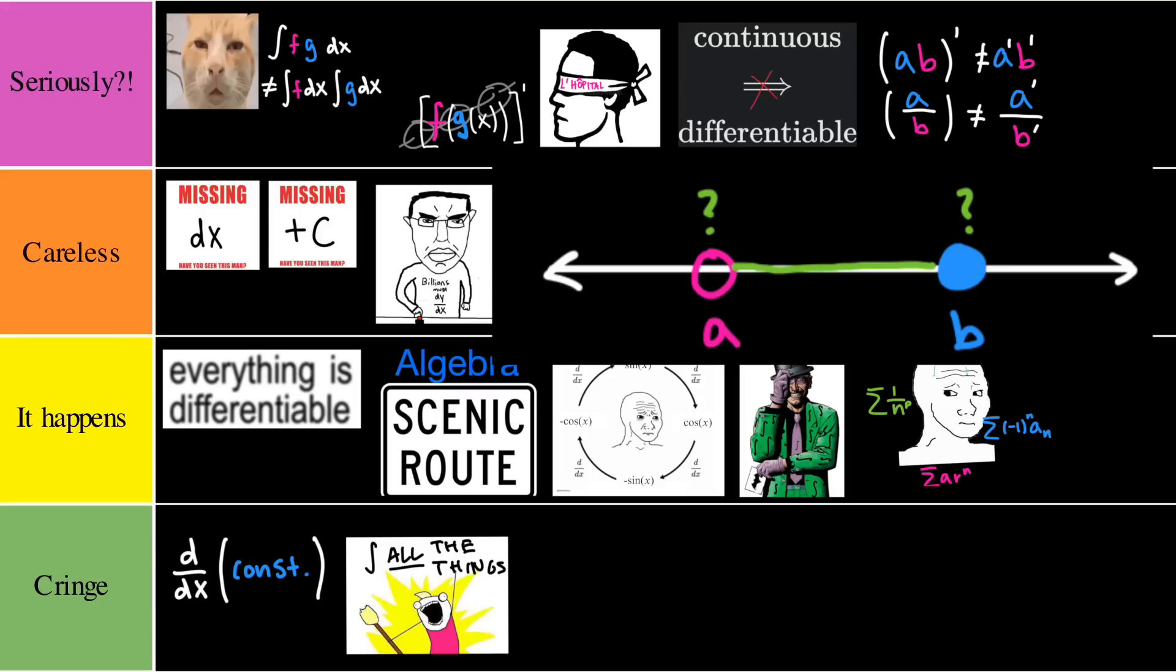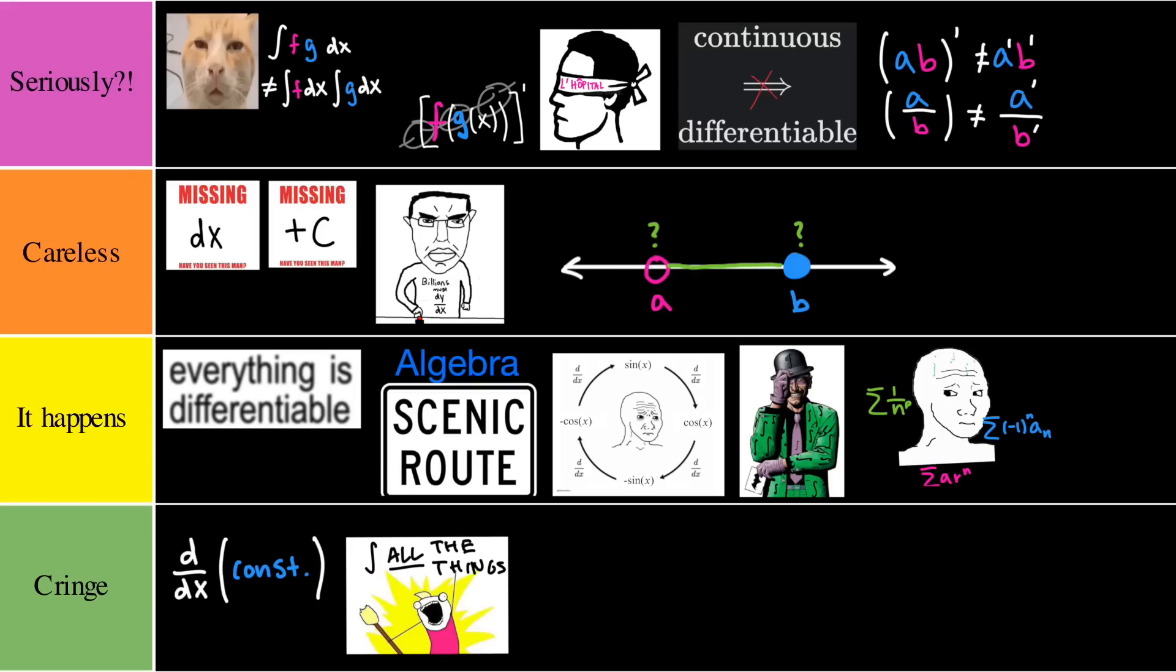Speaking of series convergence tests, our next offender is not checking the interval of convergence for a power series. When we are working with this series, we need to make sure where it converges. But not only that, we have to test the endpoints to see if there's convergence at the boundaries. This is why we study series convergence tests, so after plugging in these endpoints, we can quickly determine convergence simply by inspection. Careless tier, simply because this is part of the procedure.